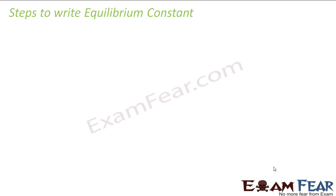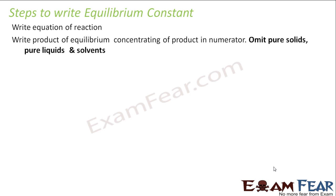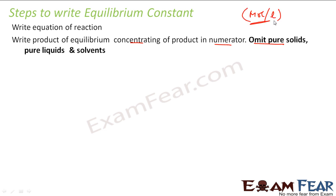Now that we have learned about the equilibrium constant, let's understand the steps to write the equilibrium constant for a given reaction. First, write the equation for the reaction. Then write the product of equilibrium concentrations of the products in the numerator. Next, omit the pure solid, pure liquid, and pure solvent parts. Everything is written in moles per liter.